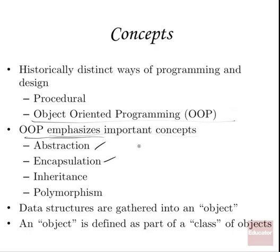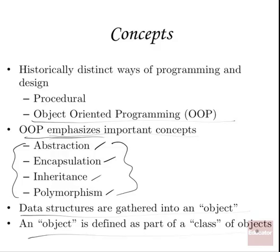Abstraction, encapsulation, inheritance, and polymorphism — I want to reiterate these because these are very important concepts that will be used in object-oriented programming. The data structures are gathered into an object. An object is part of a class of objects, and then we'll talk about some of these other parameters in the next slides.